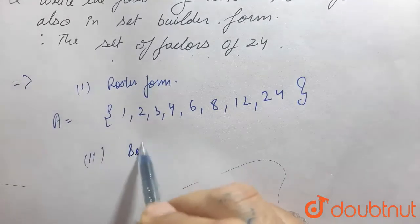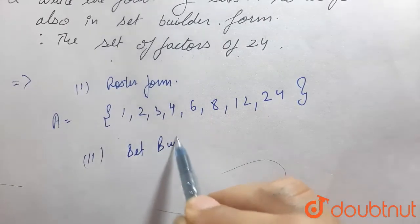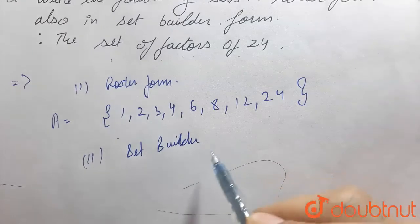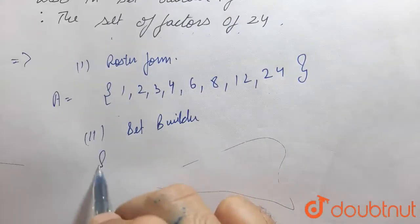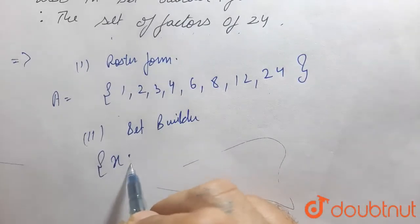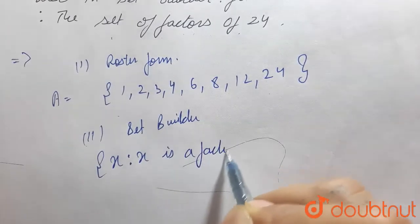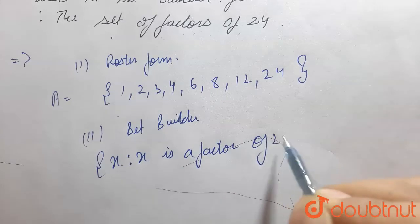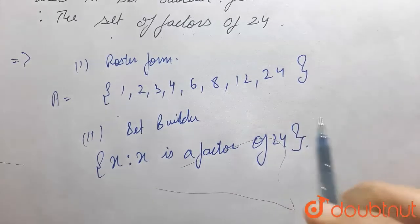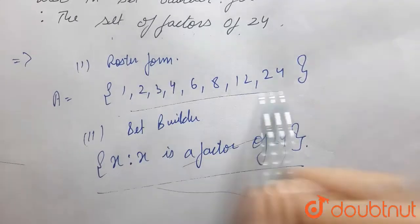And, it can be written as, in set builder form, it can be written as, x such that, x is a factor of 24. Clear? And this is our answer.